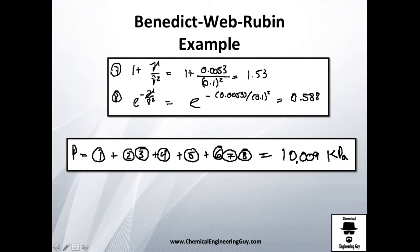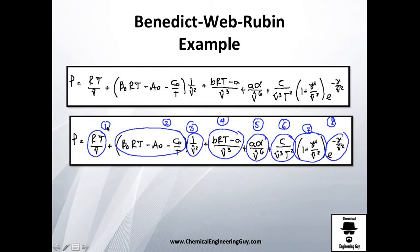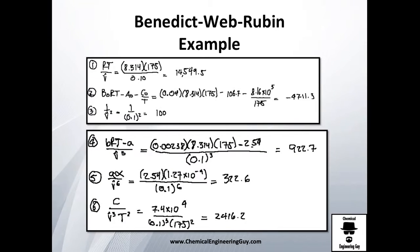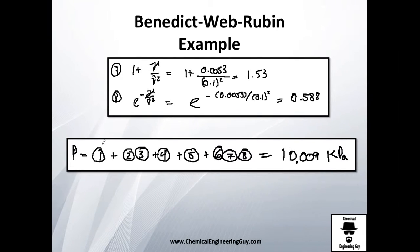You also need terms seven and eight, which are here and here. Now go back to the equation: term one adds two and three; two multiplies three; six, seven, and eight multiply together. Then add the results and multiply the remaining groups together.